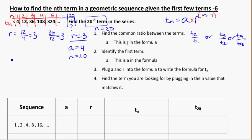Plugging into my formula then, we'll write it out here first. So the 20th term, t20, is going to be equal to a, which is 4, times r, which is 3, to the power of n, which is 20, minus 1, in brackets.